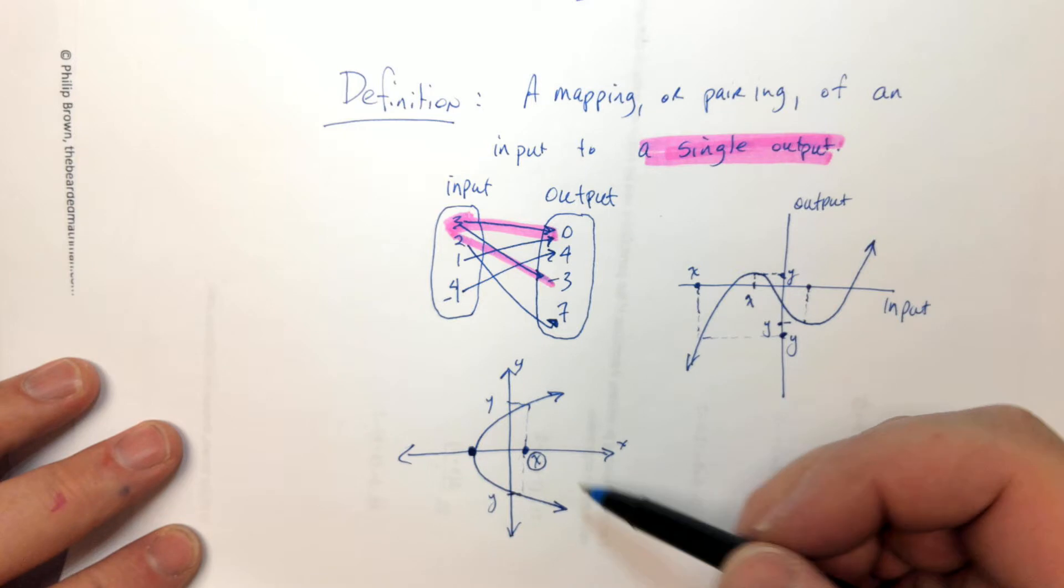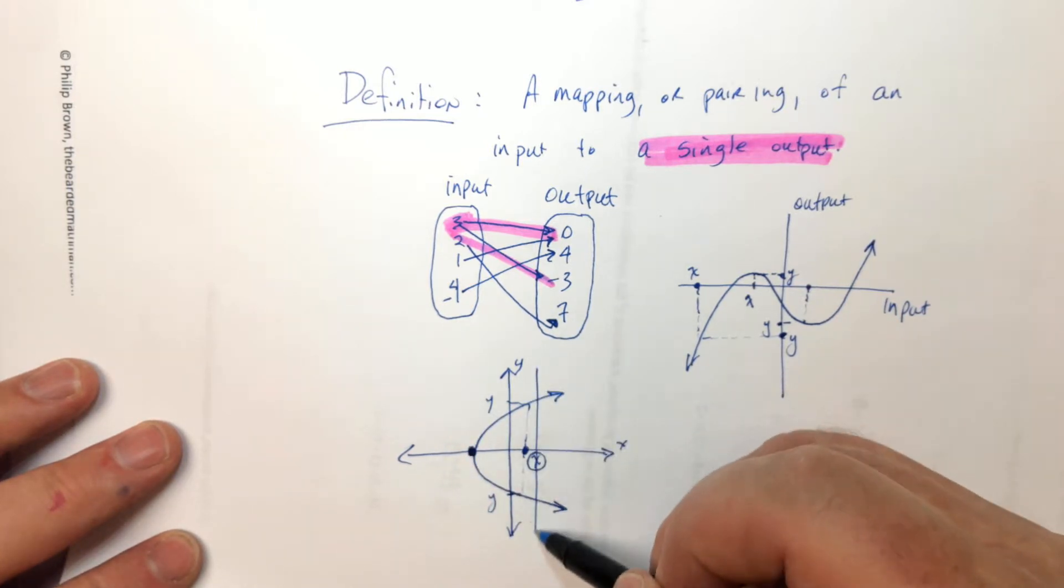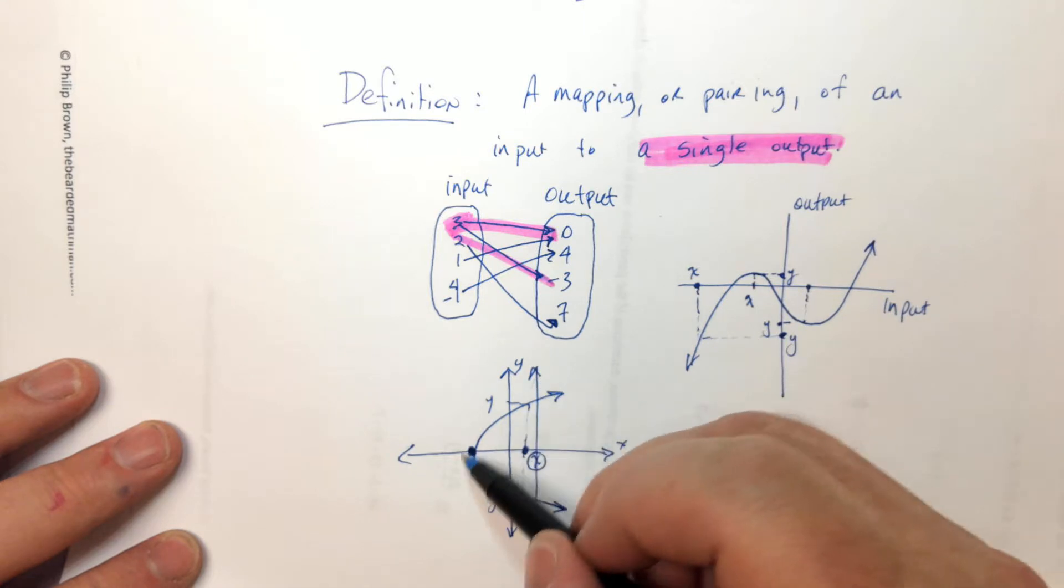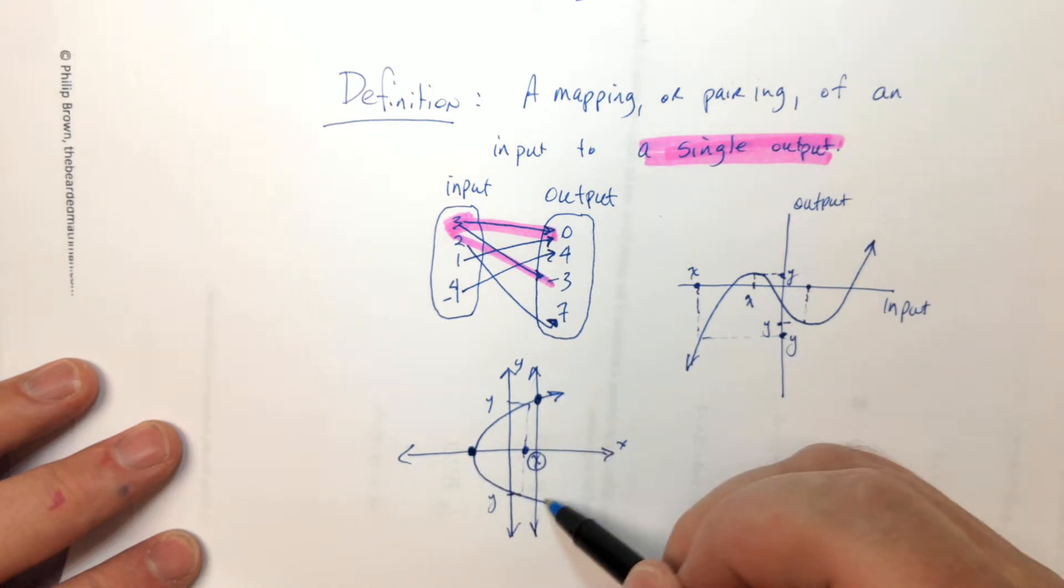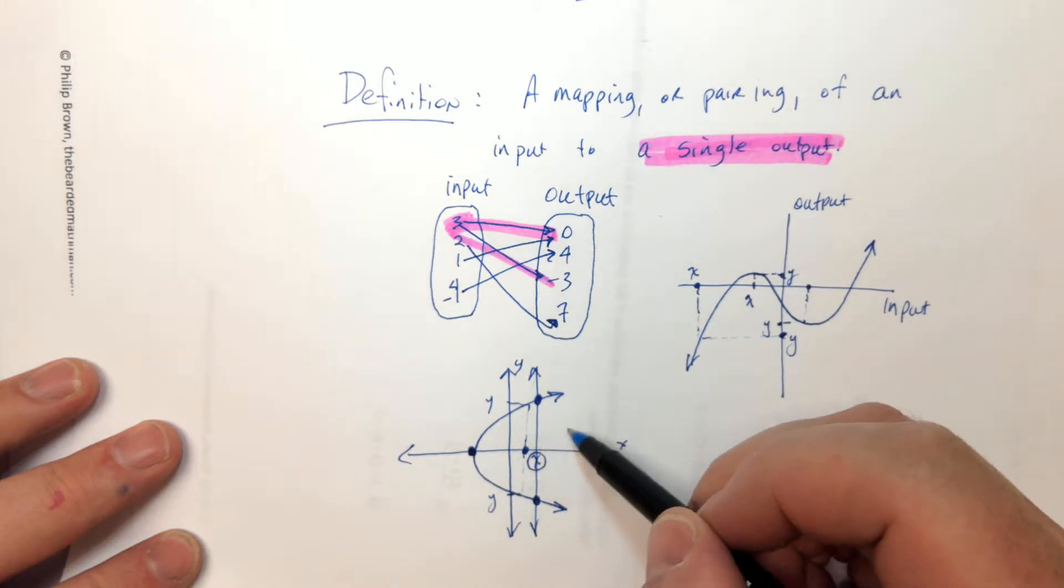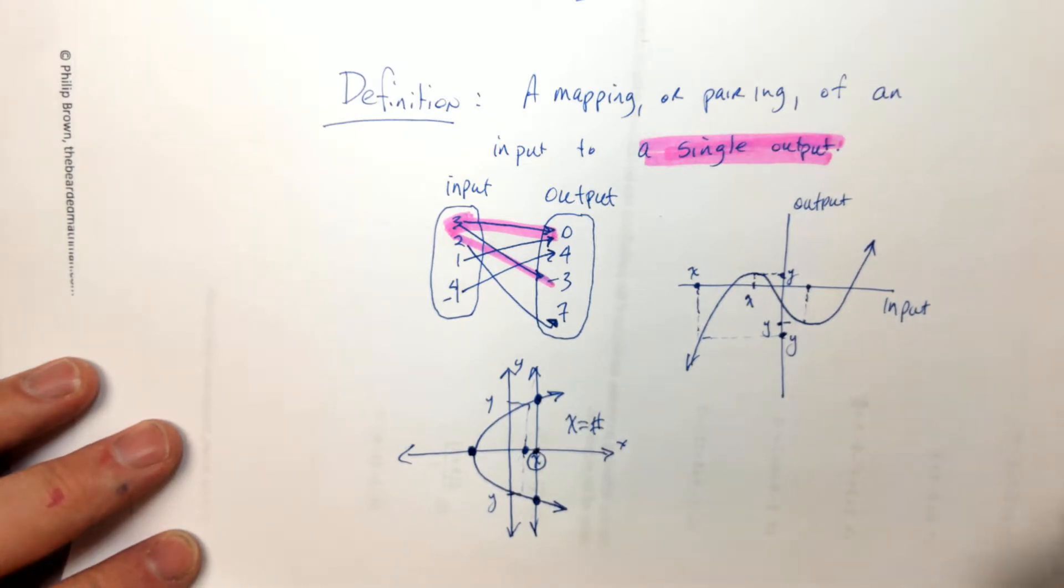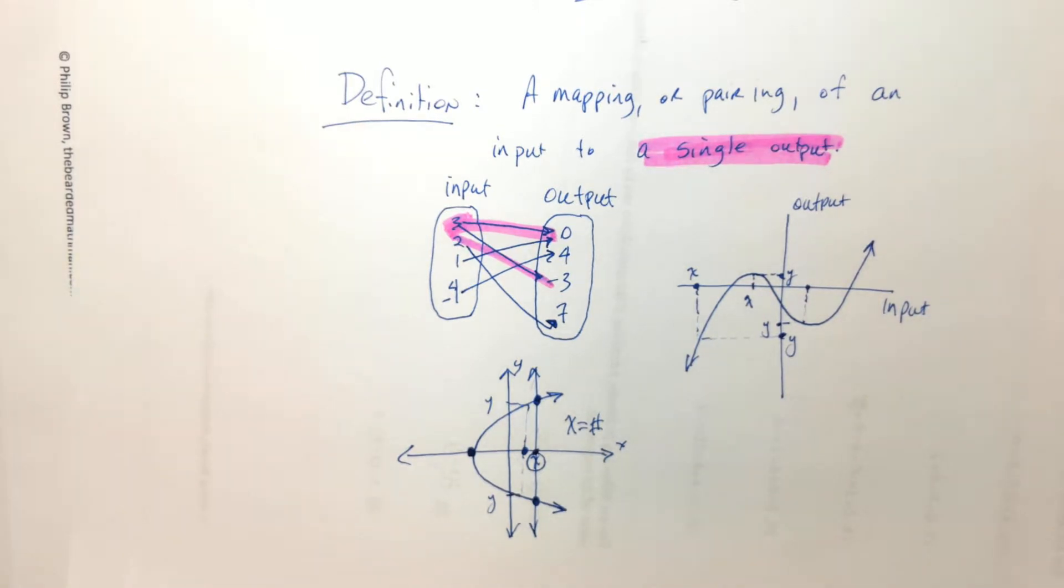So there's a shortcut for this called the vertical line test. And it says if you can draw a vertical line anywhere through your graph and it touches the curve more than once, then it's not a function. And the reason that is is because a vertical line would be like x equals that number. So when x equals that number, if it has two outputs, then it's a violation of the definition. So if it passes what? Passes through your curve more than one time.